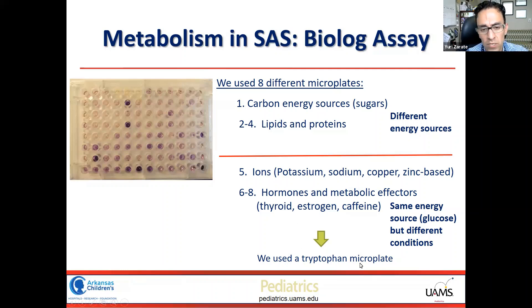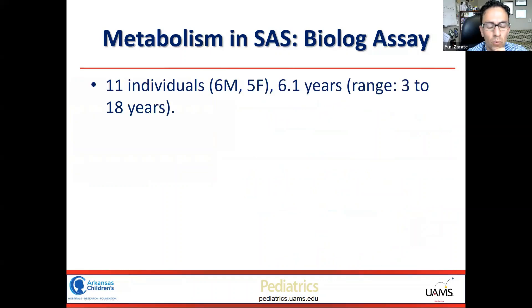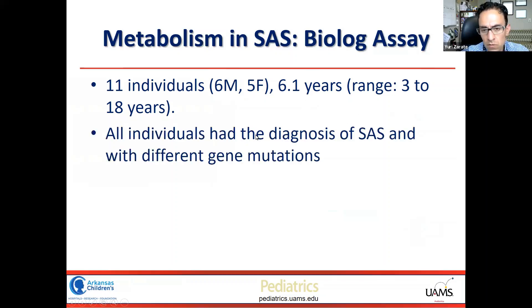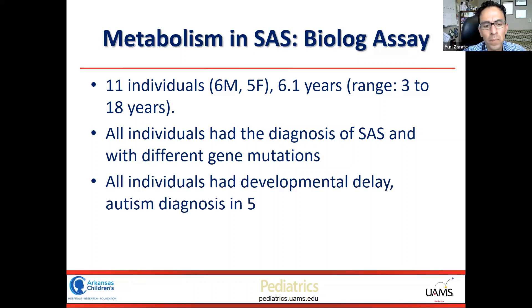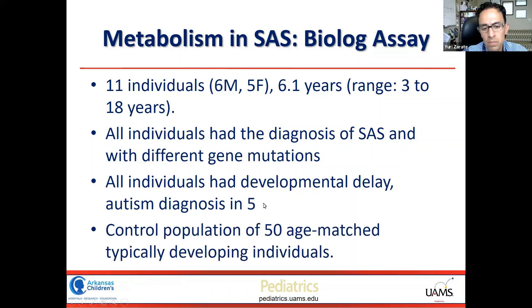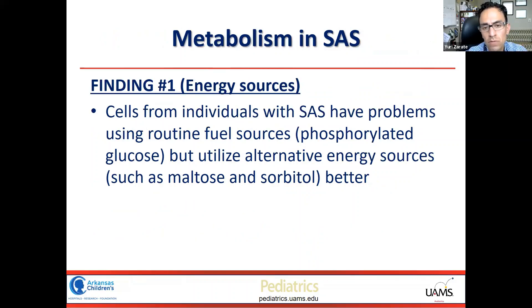We had 11 individuals with SAS — six boys, five girls — with an average age of six years and a range of three to eighteen. All had confirmed diagnoses of SAS with different genetic changes, all had some degree of developmental delay, and five had autism. We compared the values from these 11 samples against 50 age-matched typically developing individuals.